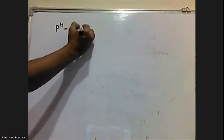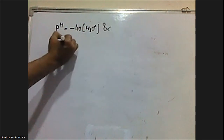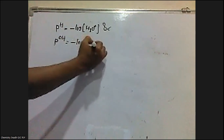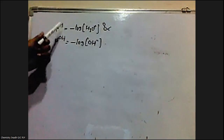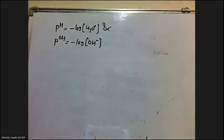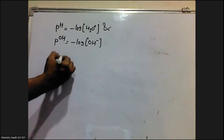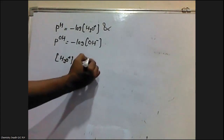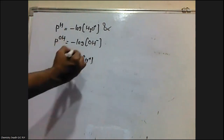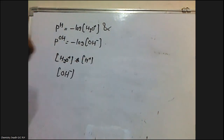In my previous video, I discussed about the pH scale which was introduced by Sorensen. pH is the negative logarithm of hydronium ion concentration, and pOH is the negative logarithm of hydroxyl ion concentration. In order to calculate pH, we need the concentration of hydronium ion or H⁺ ion. And to calculate the pOH, we need to know the concentration of hydroxyl ion.